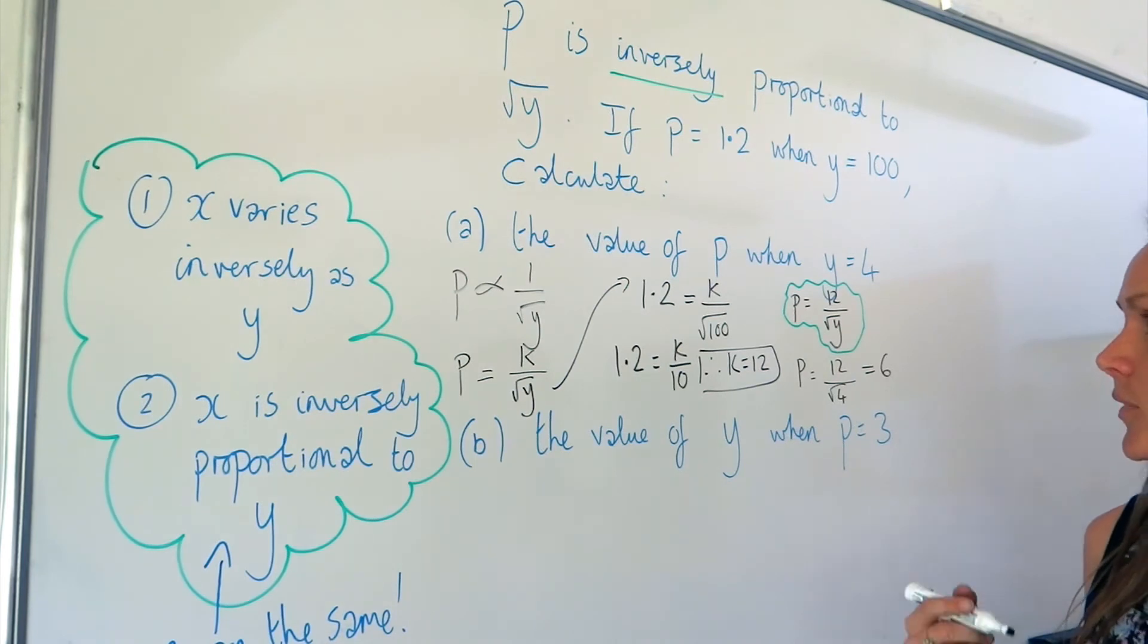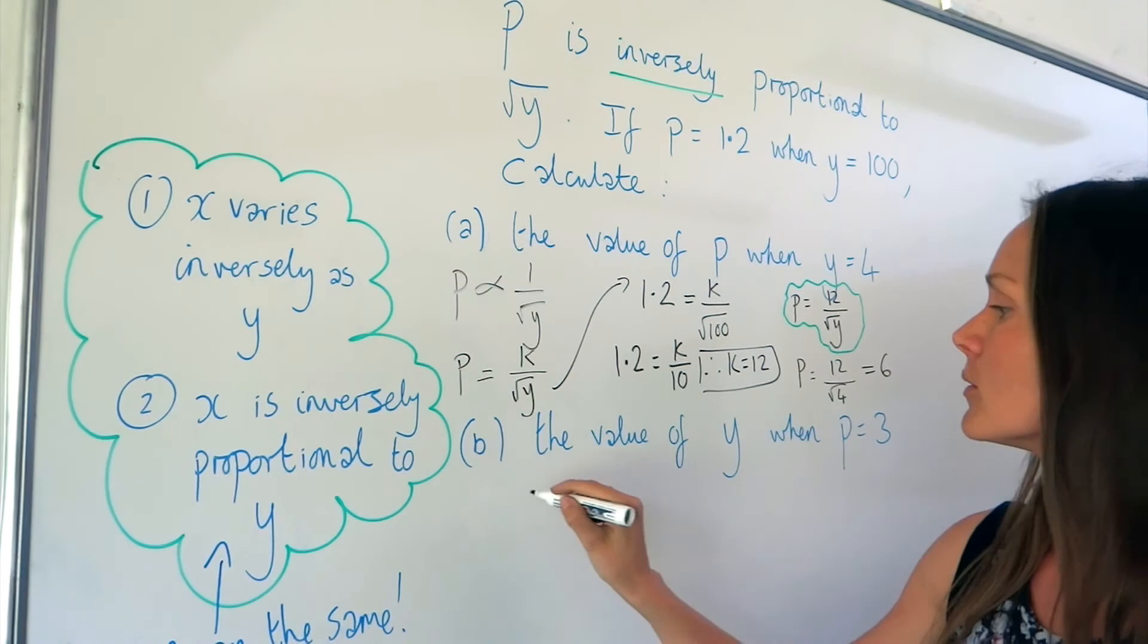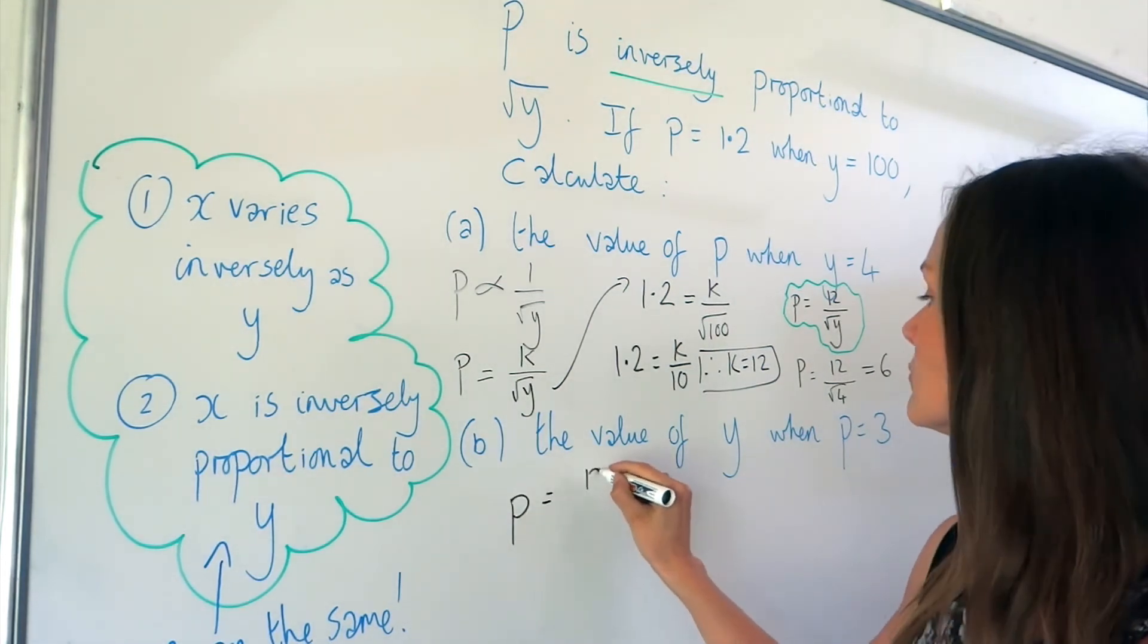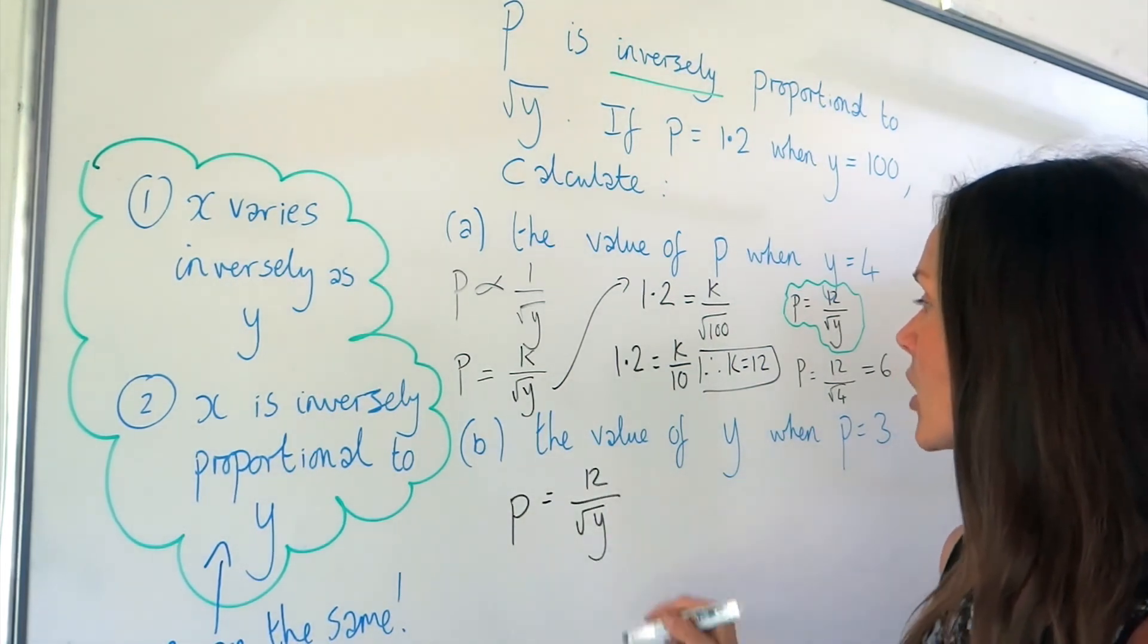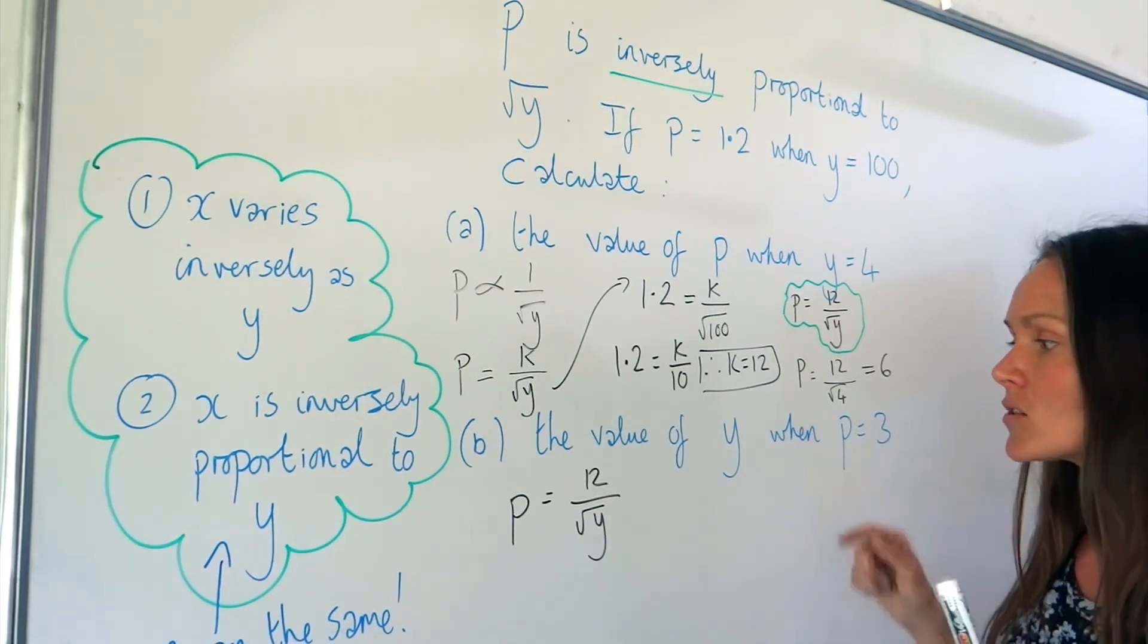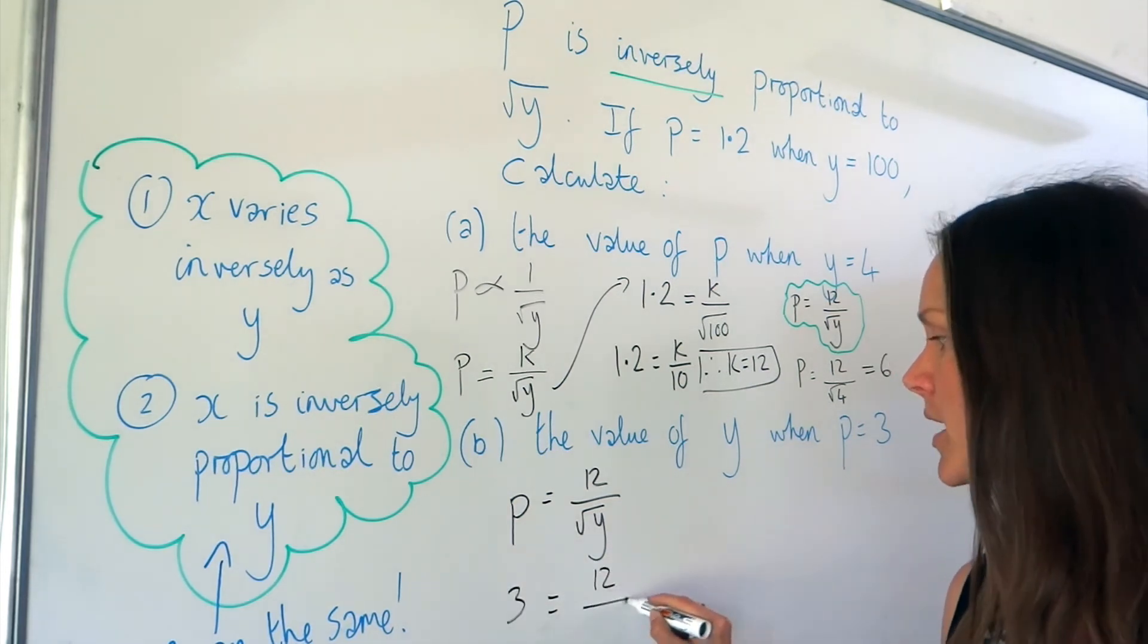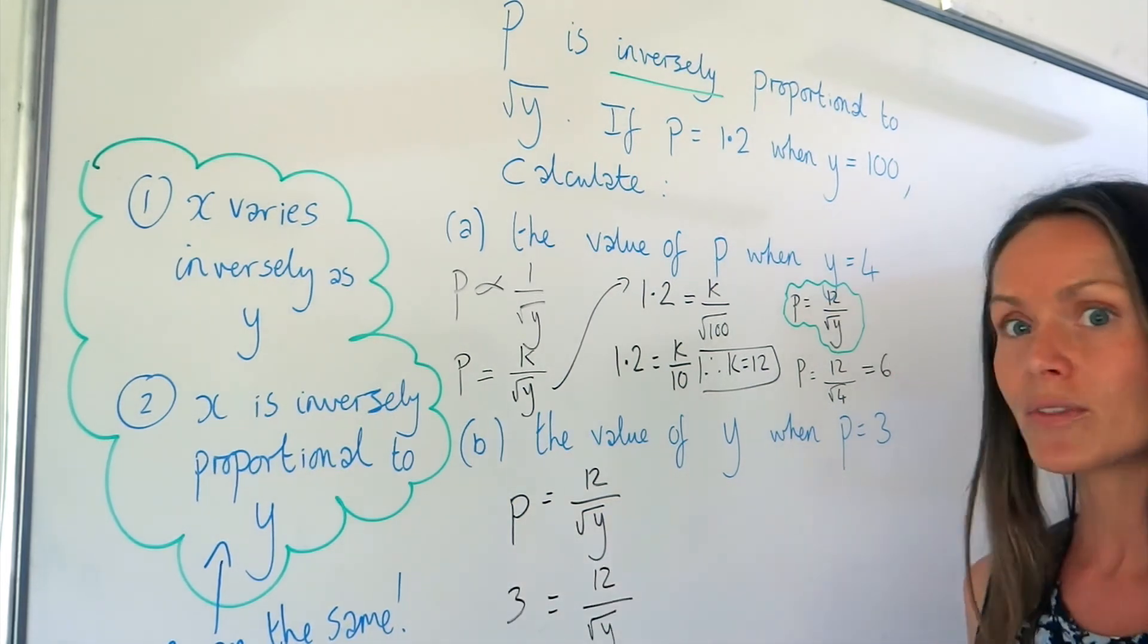All right, on to part B. Use that equation again, the one I've highlighted here. So let's write that out again. Except this time we're finding the value of Y, and we're told the value of P is 3. So this time you're replacing P with the number 3. And now we need to solve this equation.